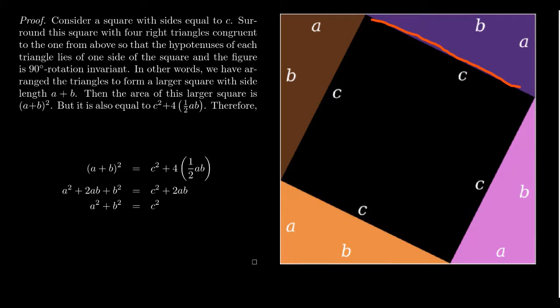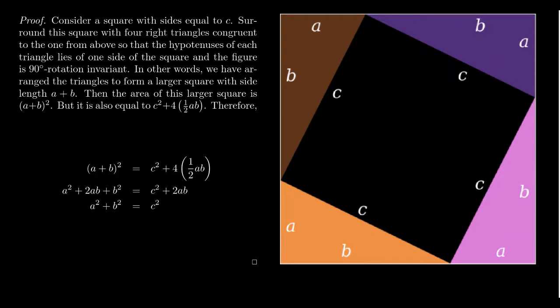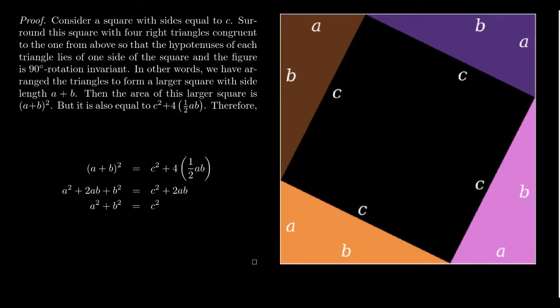The hypotenuse of that right triangle ABC coincides with the length of the square. Orienting the triangles around it — like playing ring around the rosy — gives us all four triangles. Now consider the area of this figure in two different ways. Because of how we've oriented these right triangles, we've created a larger square whose side length is A plus B.